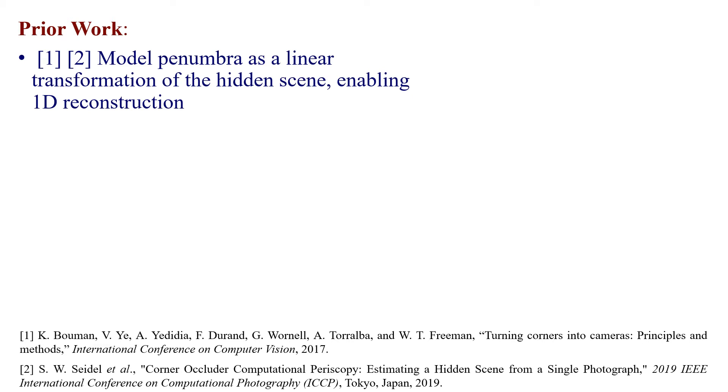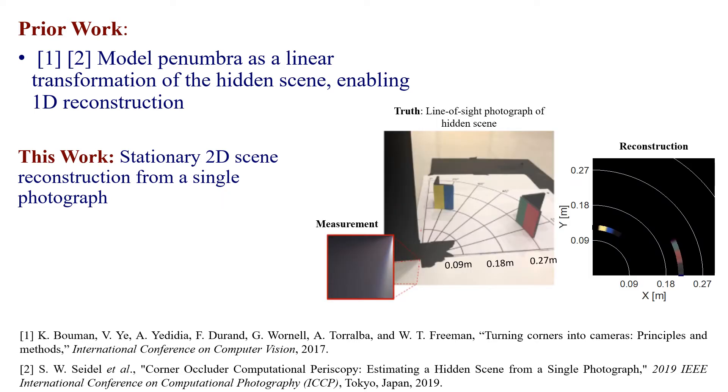Previous work has shown that the penumbra may be modeled as a linear transformation of the hidden scene enabling 1D reconstructions where that one dimension is angled into the hidden scene measured in the plane of the floor. In this work, we form a 2D reconstruction of the hidden scene from a single photograph, as shown in this figure.